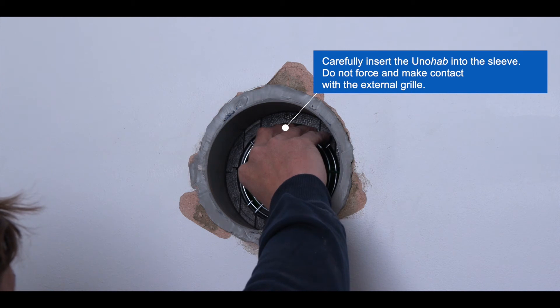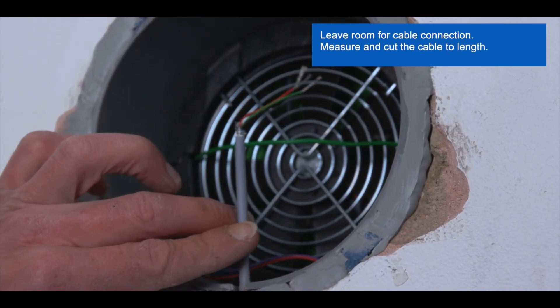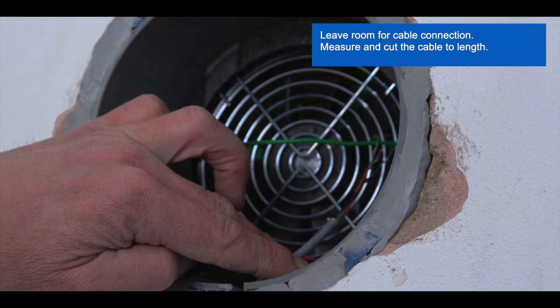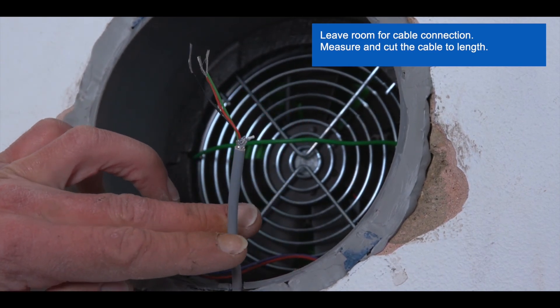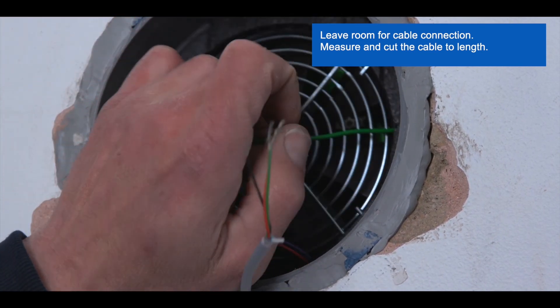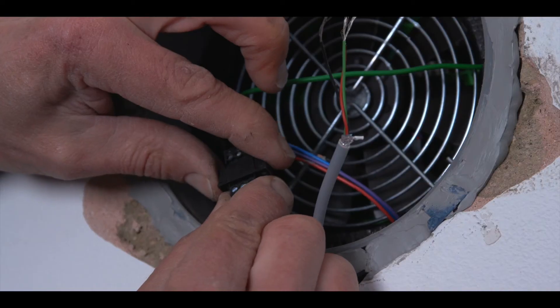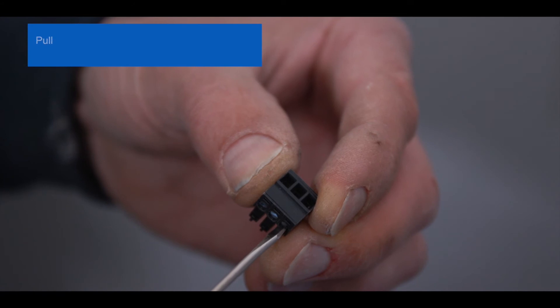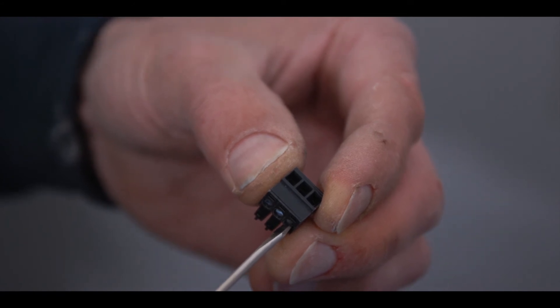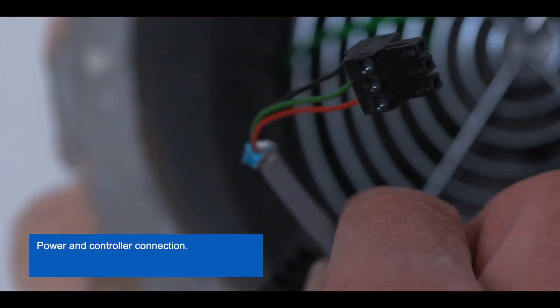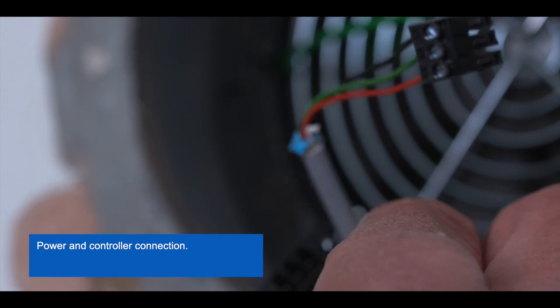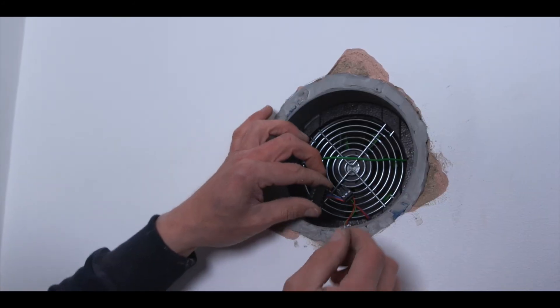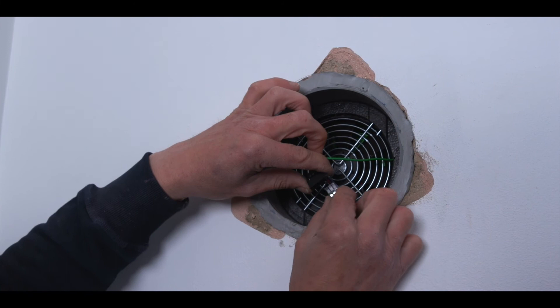Ensure you have sufficient length of cable. Measure and cut to length if necessary. Wire the controller cable as per the wiring diagrams which can be found in the unahab unit manual. Please note the maximum distance between the unahab controller and the unit is 30 meters. Once wired, plug the two-part connector back in and stow the connection cable in the allocated shell space.